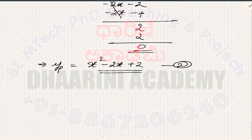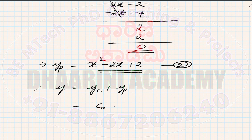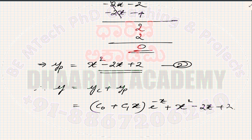Therefore yp = x² − 2x + 2. The final answer is y = yc + yp = (c₀ + c₁x)e^(−x) + x² − 2x + 2.